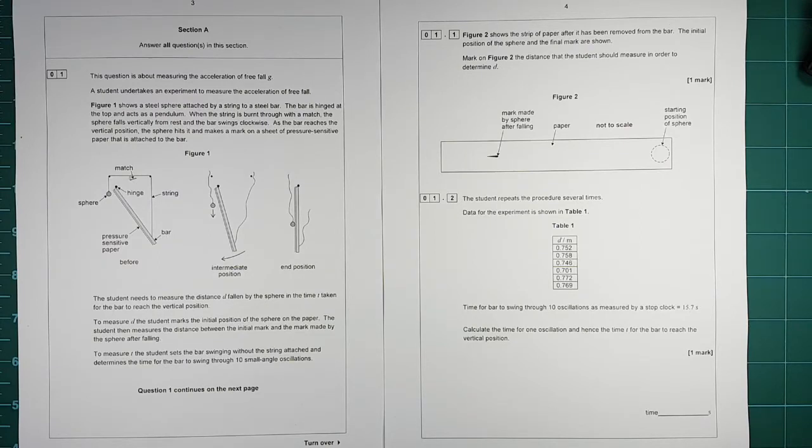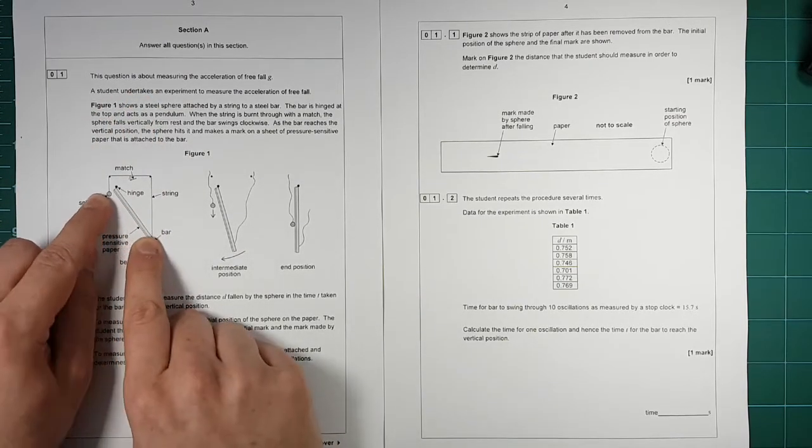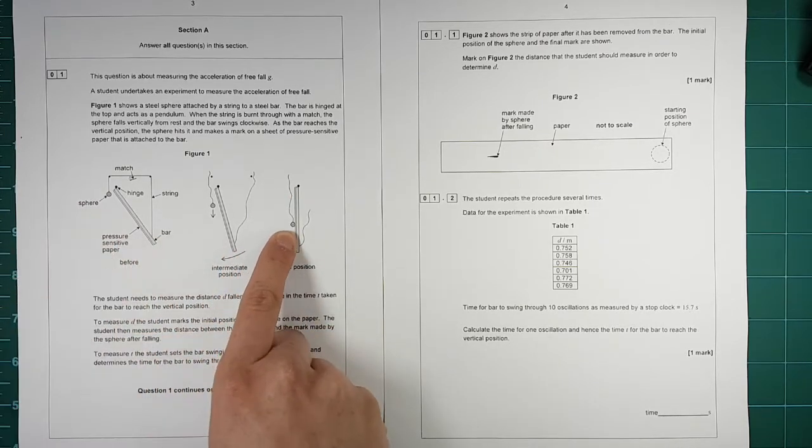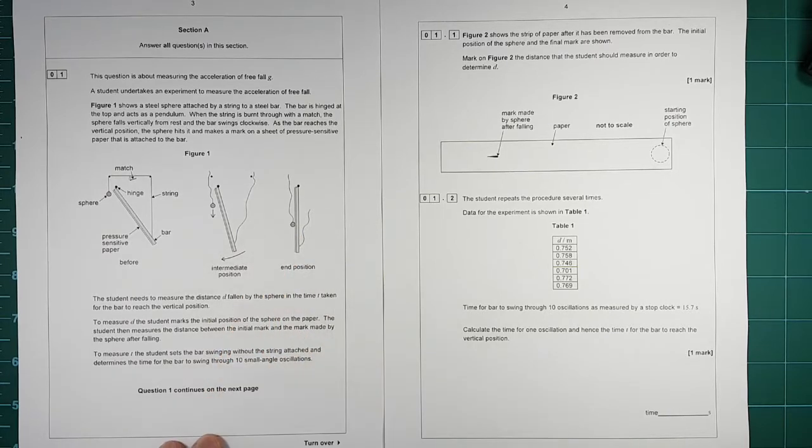Section A, there are three questions. So this is question one. It's an experiment to measure freefall. You drop this and this at the same time, they'll move down and then they'll smack into each other and you can see how far it's gone down by it making a mark on the paper.